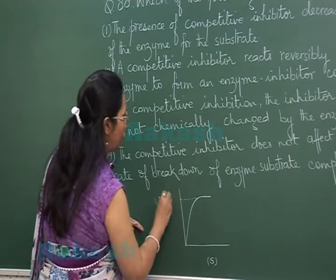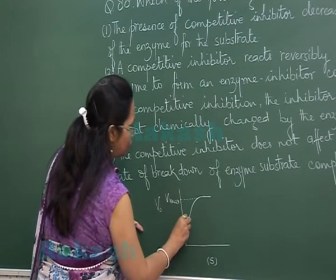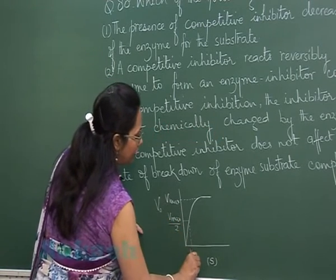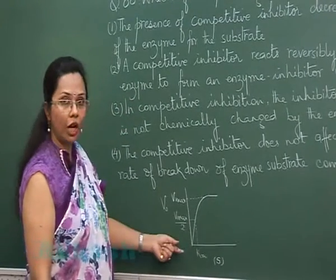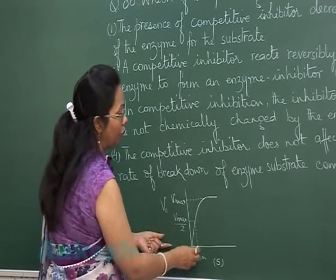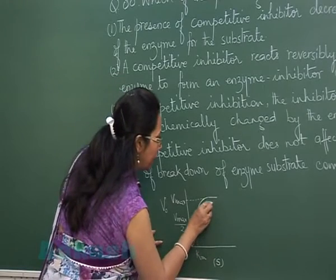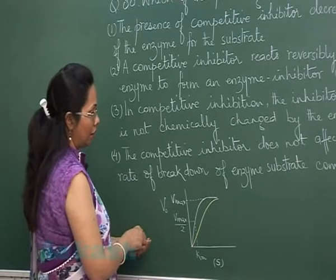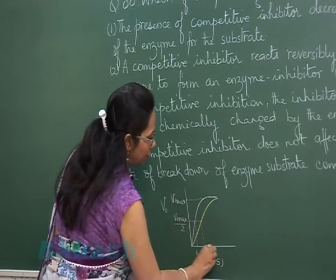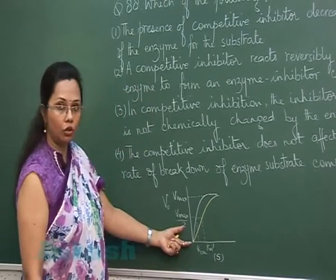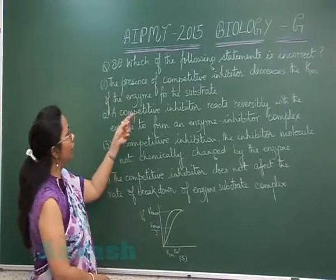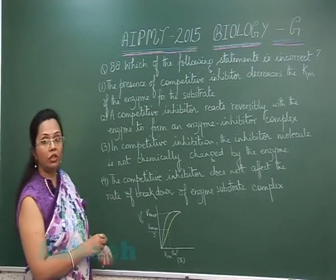This is the Vmax, and half of this maximum velocity corresponds to the Km value — the substrate concentration at which half of Vmax is achieved. If a competitive inhibitor is present, more substrate is required to reach the same velocity, meaning there is a new Km which is greater than the original. So the first statement is incorrect because it says Km is decreasing, but it is actually increasing.